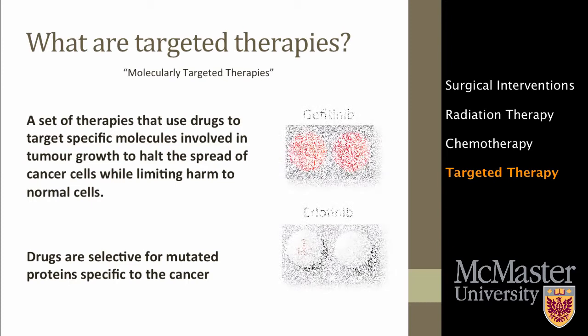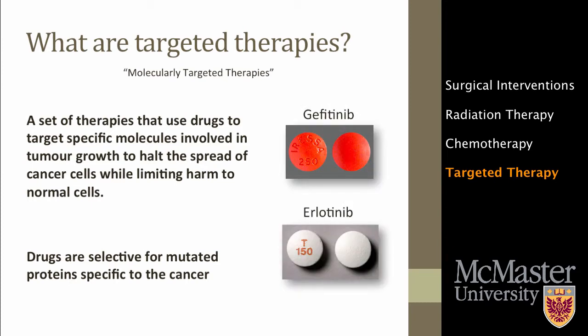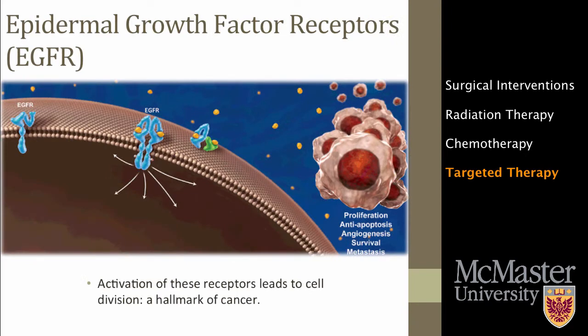In Canada, two targeted therapies have been approved for non-small cell lung cancer. They belong to a group of drugs known as growth factor receptor tyrosine kinase inhibitors. These drugs prevent the activation of a protein that can be found spanning the outer wall of cells. This protein is known as the epidermal growth factor receptor, or EGFR. Normally, activation of these receptors results in signals being sent to the cells, telling them to divide. There is often an excess of these receptors on cancerous cells, which leads to the uncontrollable division associated with cancer. By inhibiting this protein with targeted therapies, we can help lessen the signals that tell the cancer cells to grow and spread.